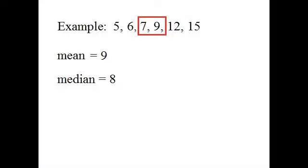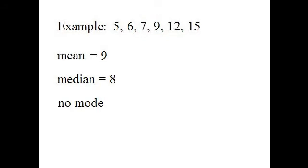To find the median, the first thing I do is sort the values from smallest to largest. In this example, because I have six values, there are two numbers in the center — 7 and 9 — so the median is going to be exactly between those two numbers. I can take the average of 7 and 9, so in this example my median is 8. The mode is the value that occurs most often, and none of the values occur more than once in this data set, so there's no mode. But that's okay — we don't have to have a mode. In fact, sometimes we'll have more than one mode; we might have two or three or four even, and that's okay too.